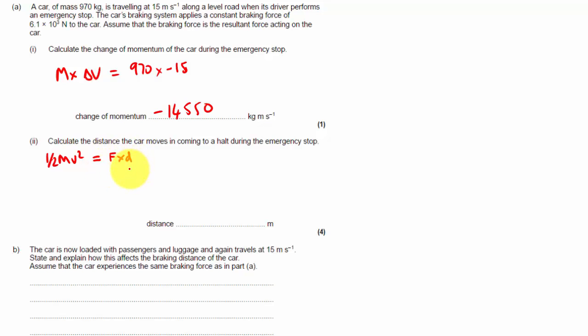Right, so if I want to find the distance travelled and the force was constant, I can just divide both sides by F, cancels the F on this side, so half mv squared divided by F will give me the distance travelled. So, that becomes a half of the mass, 970 times 15 squared, which is the velocity,